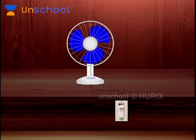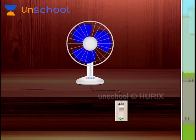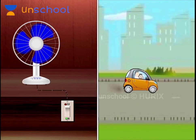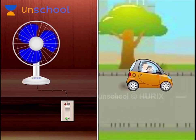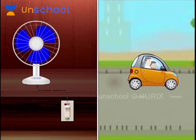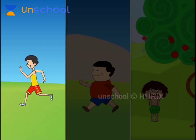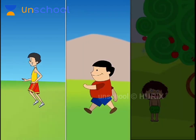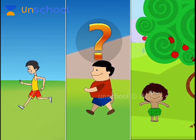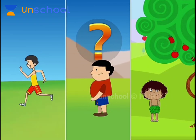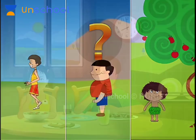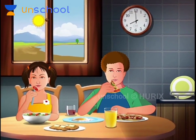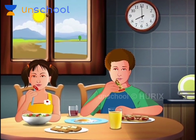A fan needs electricity to move. Vehicles run on fuel. What do we need to run, walk and jump? We need food to carry out all these activities.